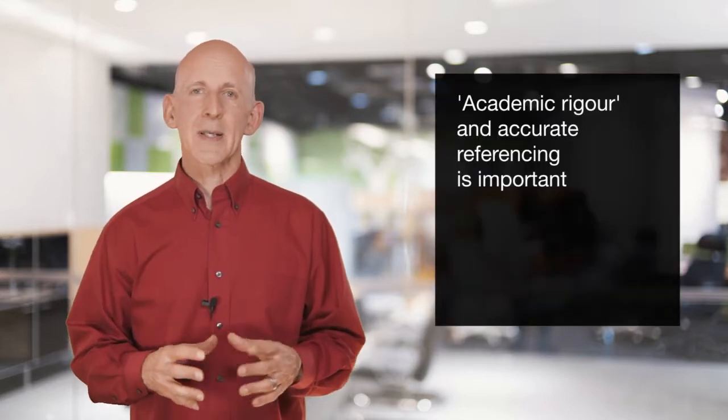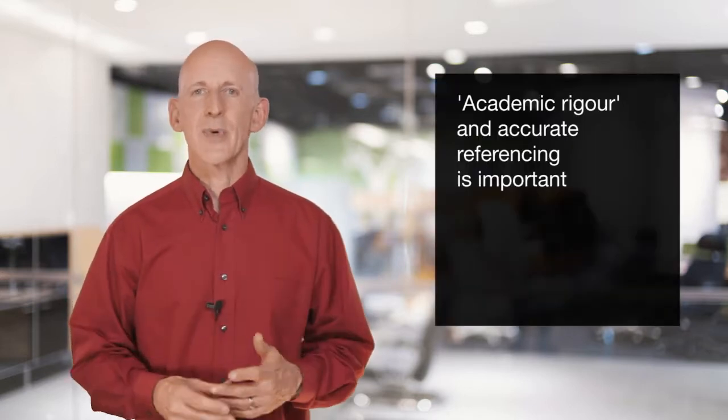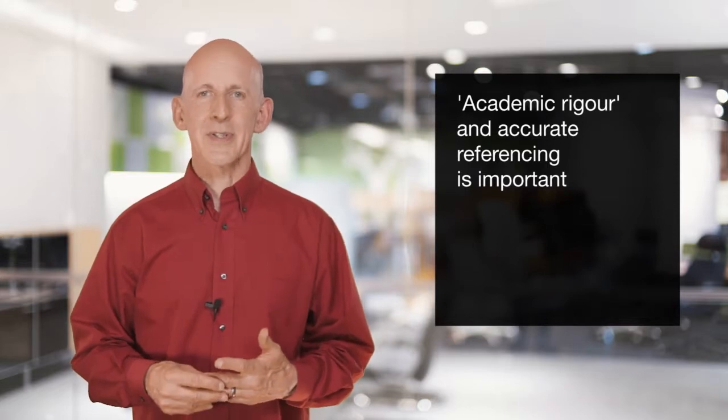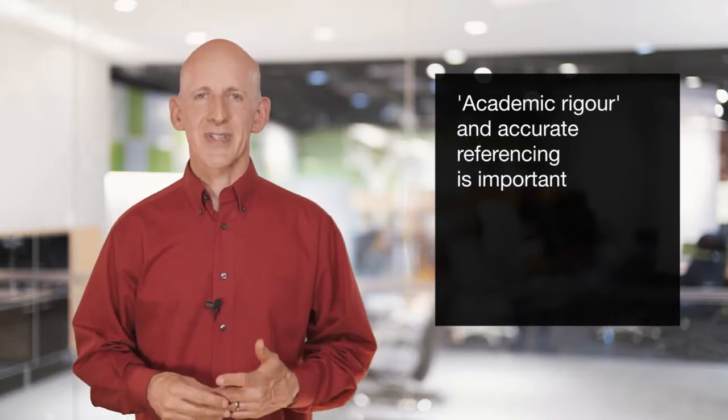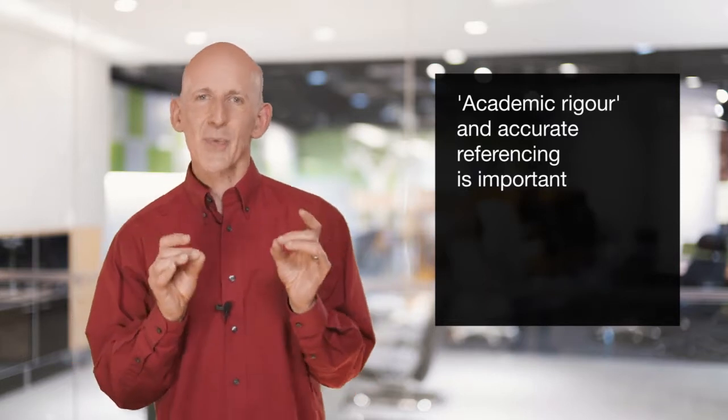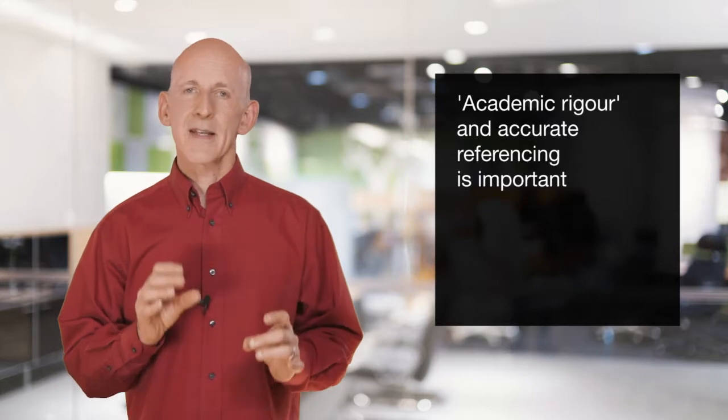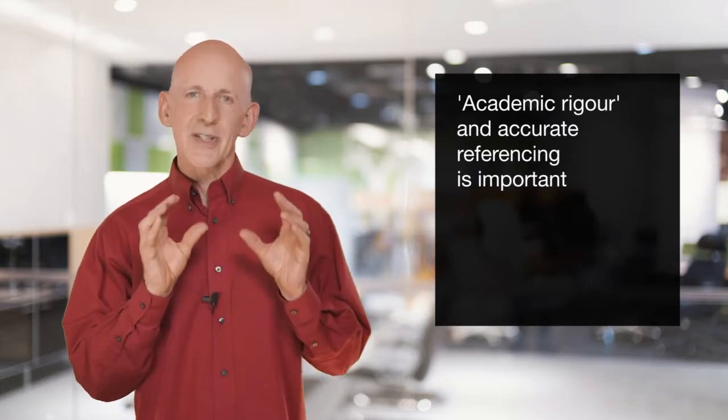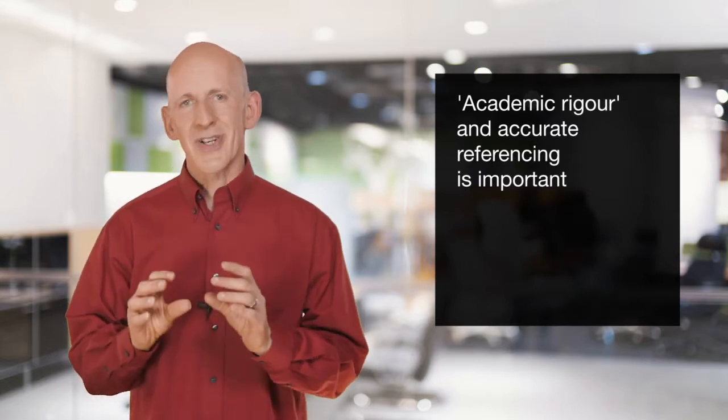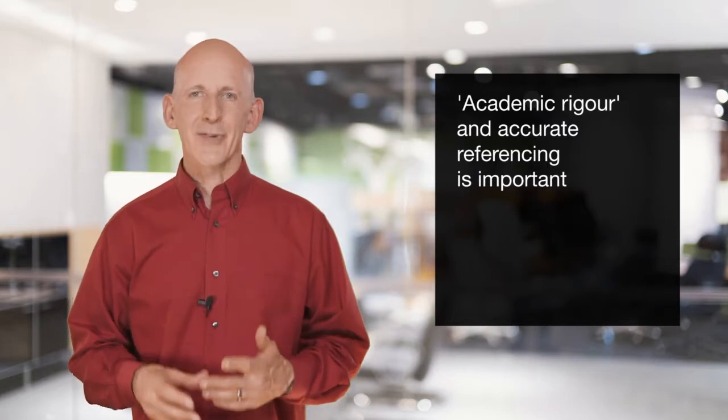The assessor is really looking for two things in particular when applying the distinction criteria. They want to see an appropriate level of academic rigour which you need to evidence by accurately citing a wide range of references in your assignments using the Harvard referencing system. The assessor doesn't want your uninformed or unsubstantiated opinion. They're looking for your opinion based on the knowledge you have gained and the research you have conducted, accurately referenced.